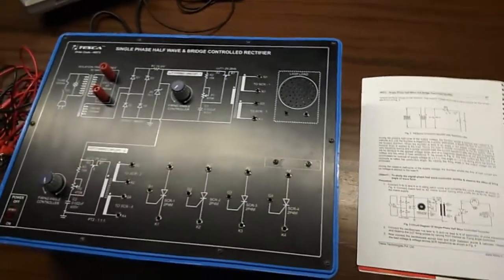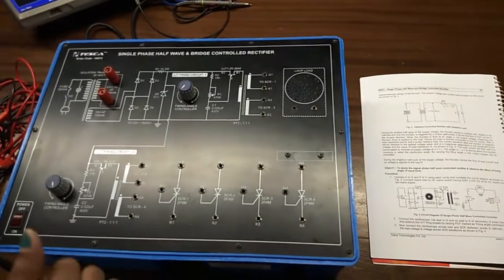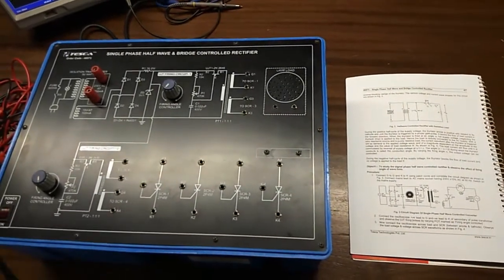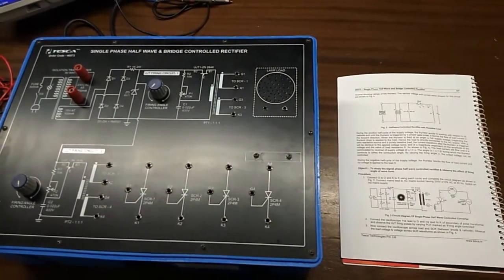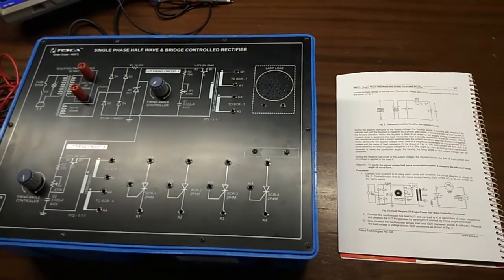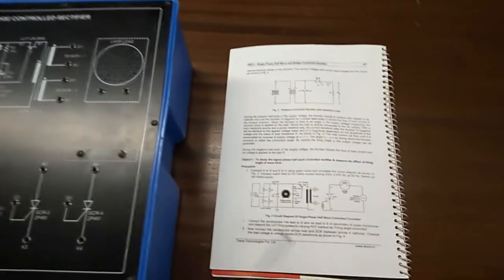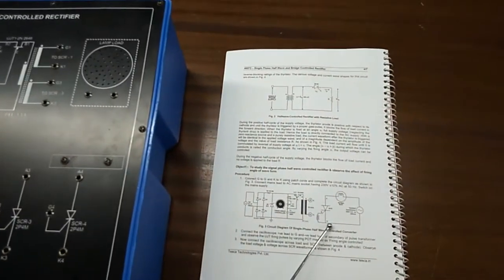Our first experiment is to study the single phase half wave controlled rectifier and observe the effect of firing angle on waveform. This is the circuit diagram and this is the connection that we need to build.